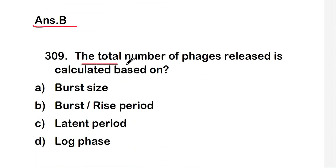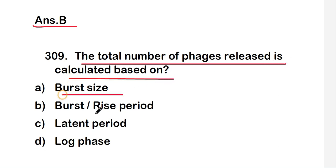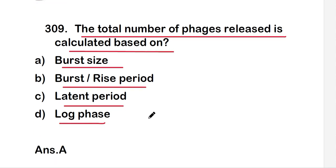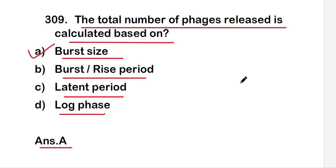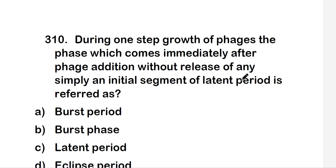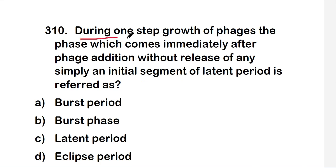The next question is: the total number of phages released is calculated based on — burst size, burst or rise period, latent period, or lag period? The right answer is option A, that is burst size. So the total number of phages released is calculated based on burst size.